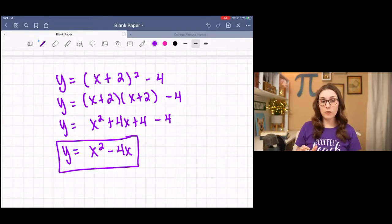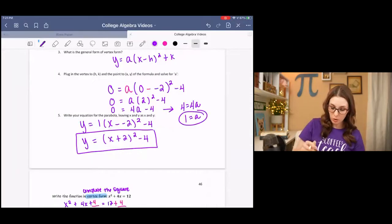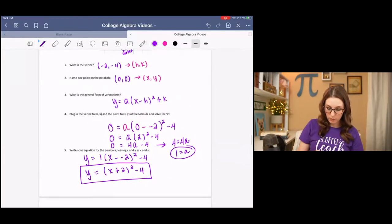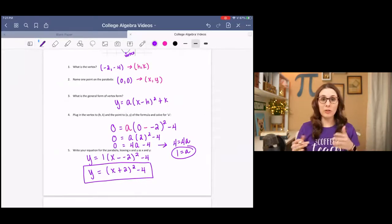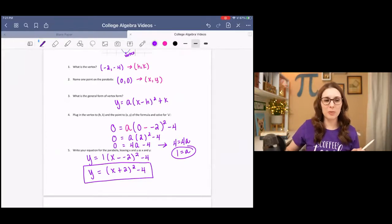So there's two different forms there, depending on what your question is asking you. But that is how you would write an equation for a quadratic or for a parabola when given the vertex and a point. That's all I have for this lesson. I hope you enjoyed it. If you have any questions, please let me know, and I'll be happy to help. See you in the next one.